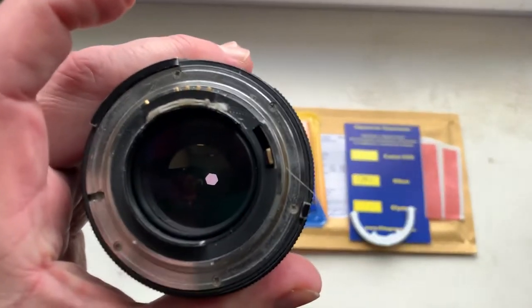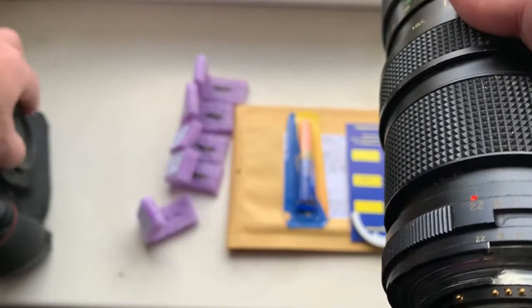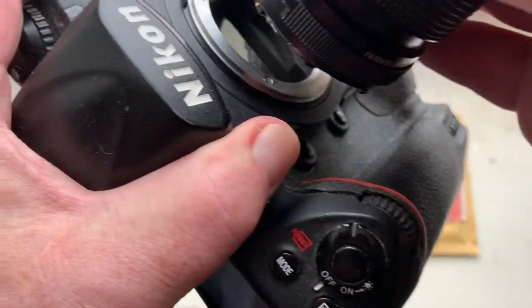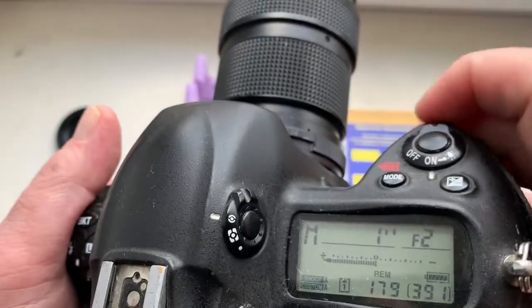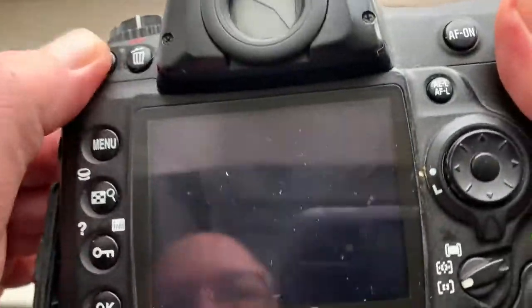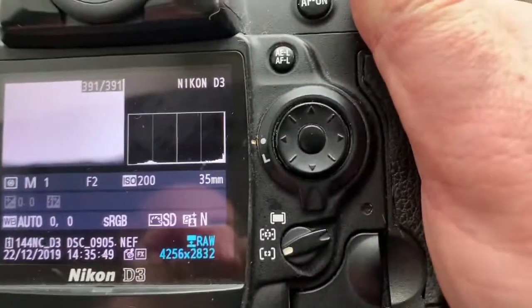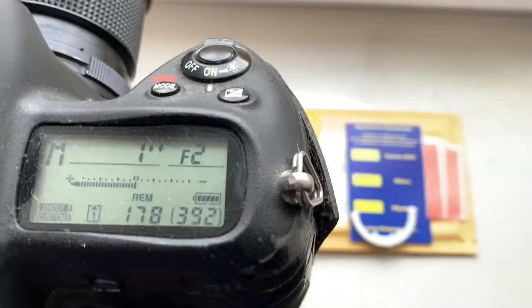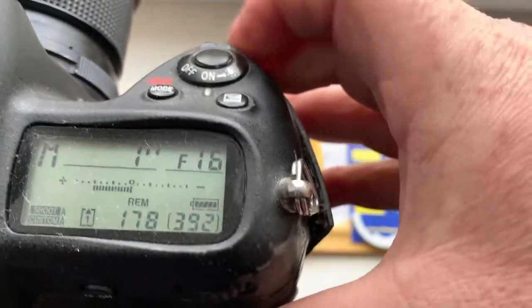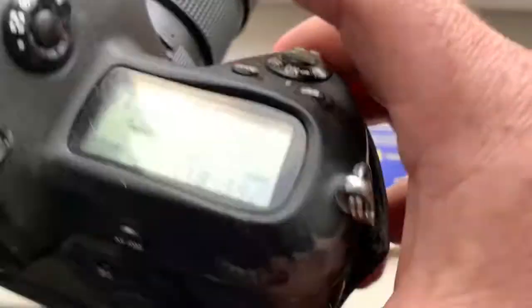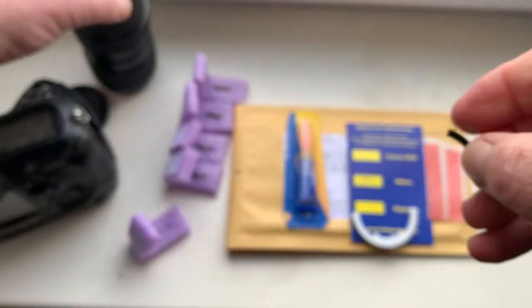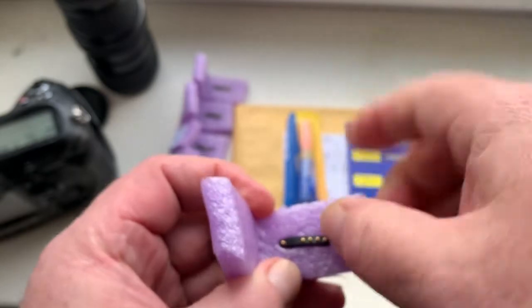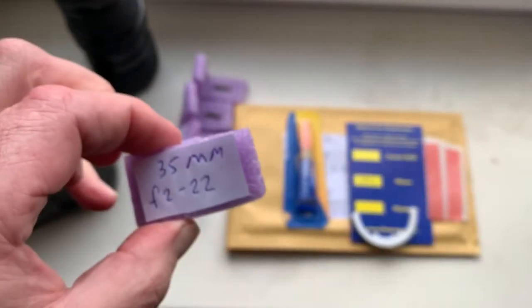Chip number one. I pre-programmed focal lens 35mm and aperture range from 2 to 22mm. The chip number one.